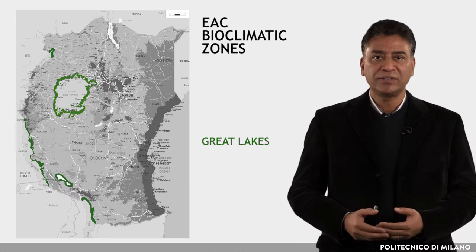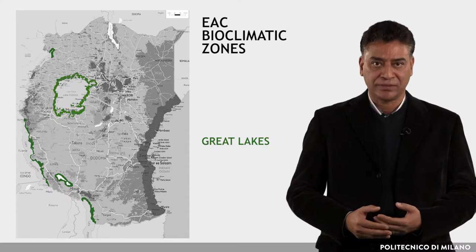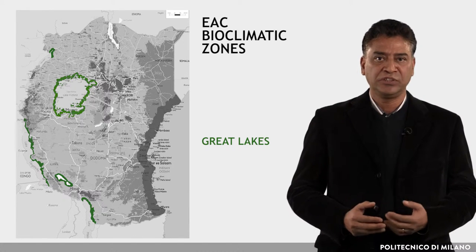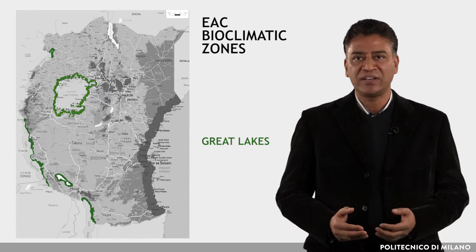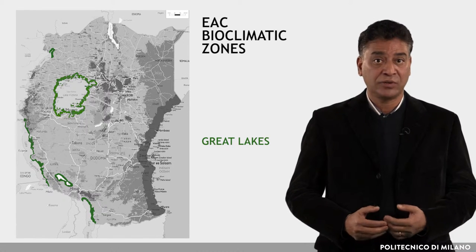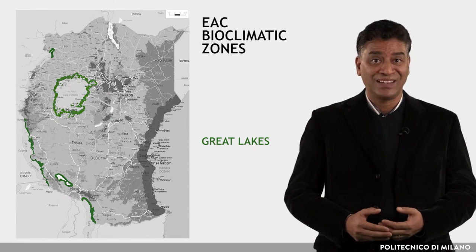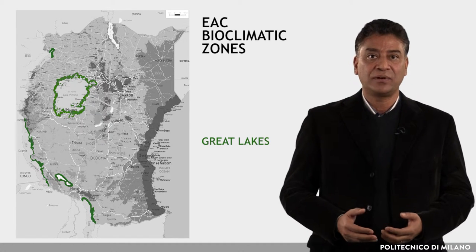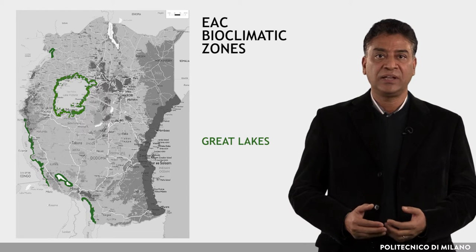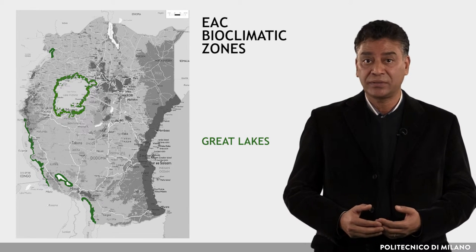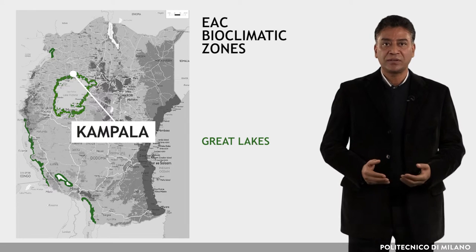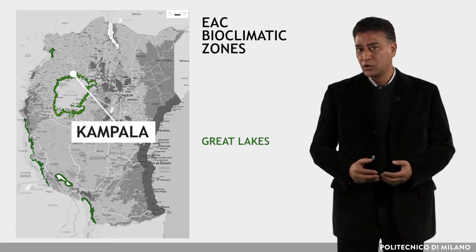The fourth zone is Great Lakes. It includes a strip 0 to 25 km wide along the shores of Lakes Victoria, Nyasa, Rukwa, and Tanganyika. The zone ranges in average from lake level to about 150 meters above lake. The representative location is Kampala in Uganda.